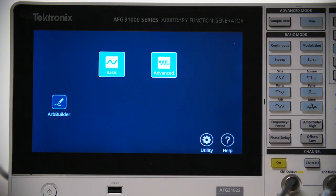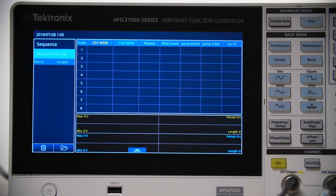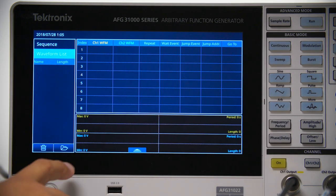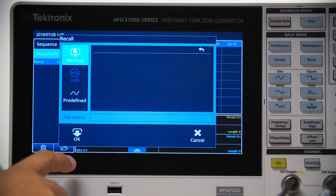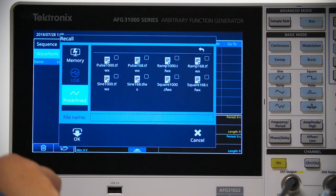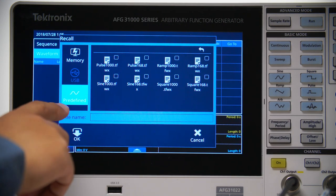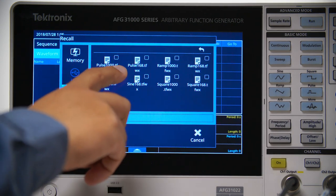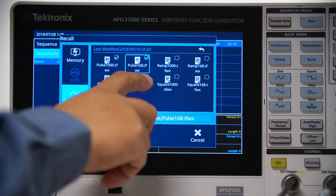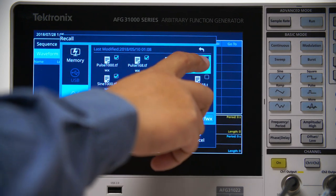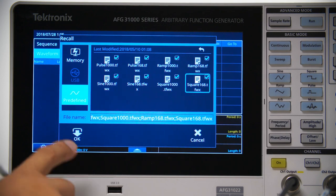Select Advanced Mode from the home page. Press the predefined button to view the built-in waveforms. Check the waveforms and click OK to add them to the waveform list.